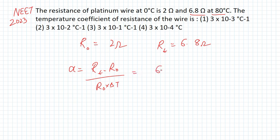So alpha equals 6.8 minus 2, divided by 2 times delta T. The temperature change is from 0 to 80, so delta T equals 80.